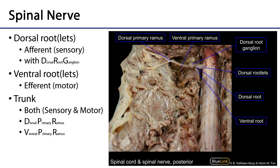Let's take a look at a cadaveric view. Here we have the dorsal aspect of the spinal cord and we can see many dorsal rootlets, as well as some ventral rootlets. These dorsal rootlets come together as the dorsal root, which is occupied nearly entirely by the dorsal root ganglion, whereas the ventral root continues on. There's the trunk, and then going toward the deep back is the dorsal primary ramus, while wrapping around and continuing on is the ventral primary ramus. The rami as well as the trunk are mixed — both afferent and efferent.